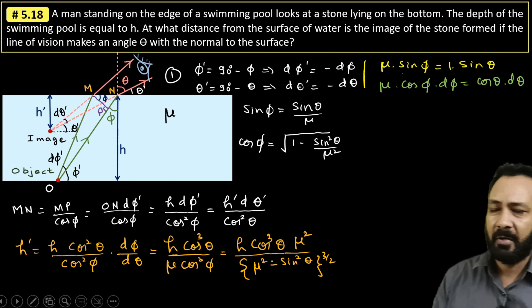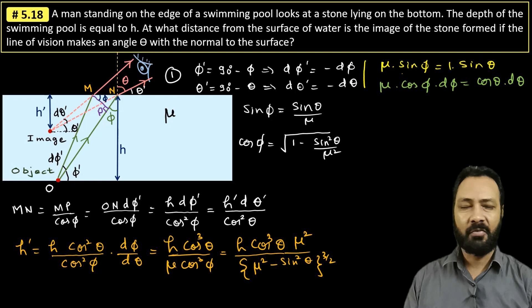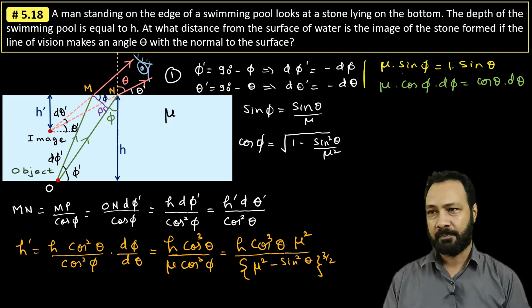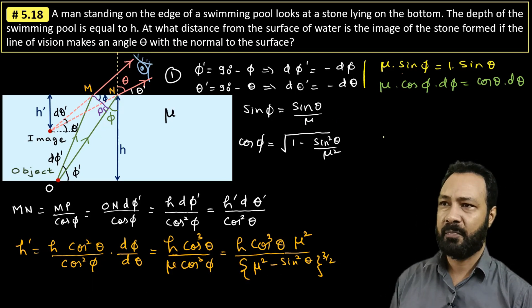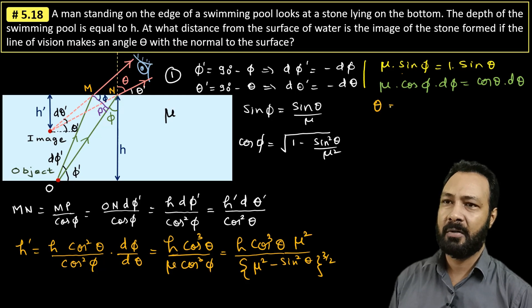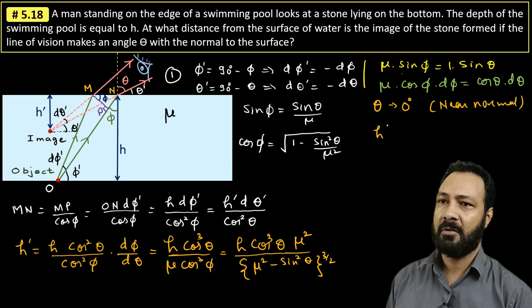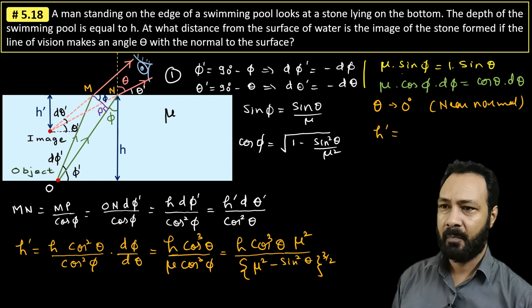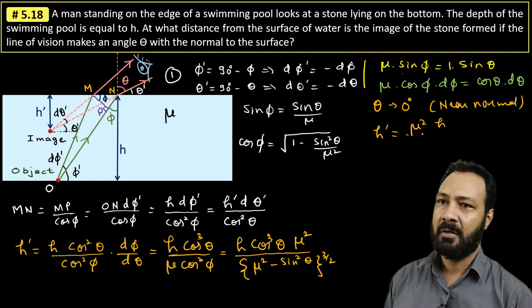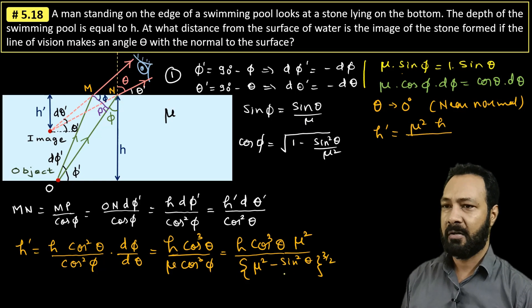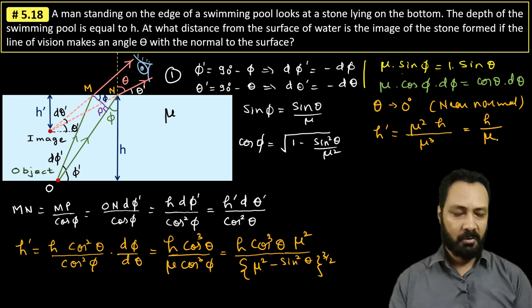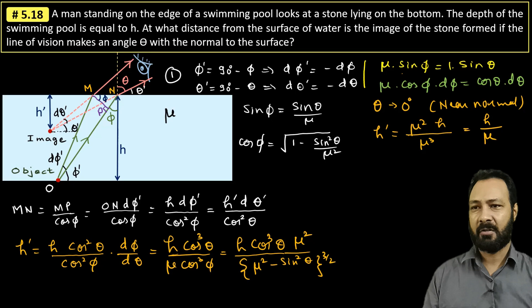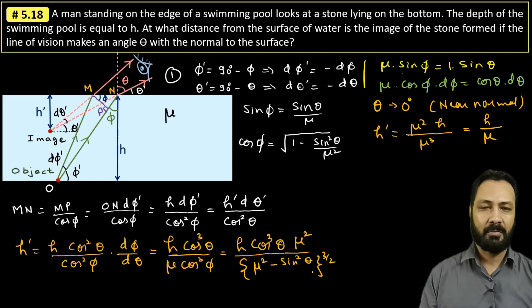That is our answer. So we have h-dash, which is a function of h, mu, and theta — the observer's location changes the apparent height. We can cross-examine this: if theta tends to 0 — that is near-normal incidence — then cos(0) = 1, so the numerator gives mu² · h, and sin(0) = 0 so the denominator gives (mu²)^(3/2) = mu³. Therefore h-dash = mu² · h / mu³ = h / mu, which is exactly the standard formula h/mu-relative. So we are verifying the result we normally use. This is why this question was special — it is a general case. Thank you.